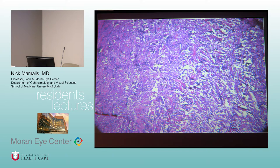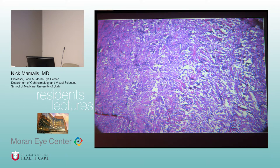On the benign side — idiopathic orbital inflammation — you see lymphocytes but also plasma cells, vessels growing through, and follicles. On the malignant side — lymphoma — you have a sheet of lymphocytes, no plasma cells, no follicles, few blood vessels. The key test to distinguish them is clonality: lymphoma is monoclonal, idiopathic orbital inflammation is polyclonal. You can do immunoperoxidase stains on formalin-fixed tissue to determine T-cell or B-cell, kappa or lambda.